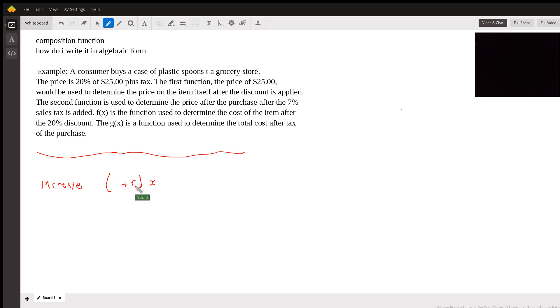So, for example, a 20% increase, which is what we're taking, sorry, a 7% increase, which is the sales tax in this problem would be one plus 0.07 times the price of the item.